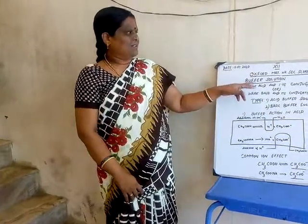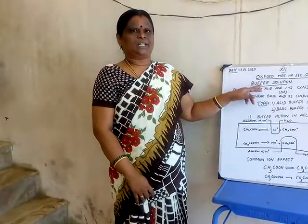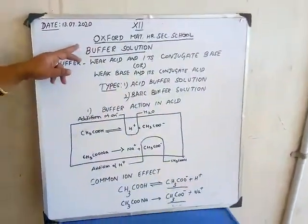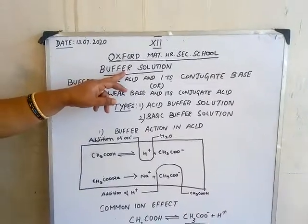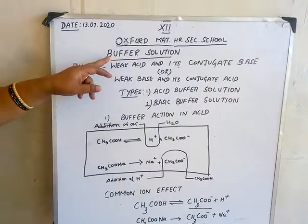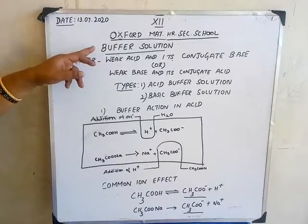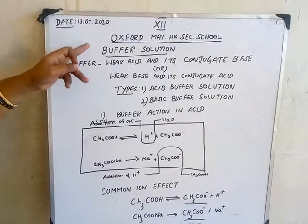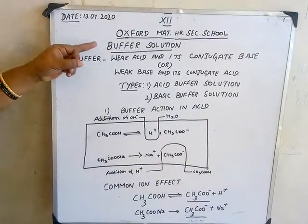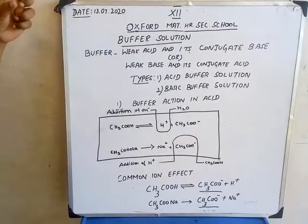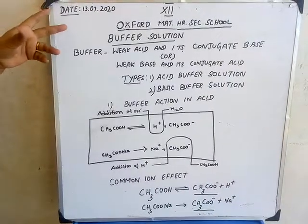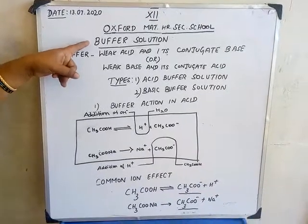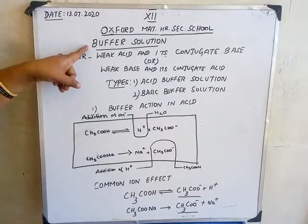Today we will discuss buffer solution in ionic equilibrium. First of all, we will discuss what is buffer. It is a solution which can resist changes in pH even when you are adding acid or base. When we are adding acid or base, it can resist changes in its pH — it doesn't show any changes in the pH. That kind of solution is called a buffer solution.